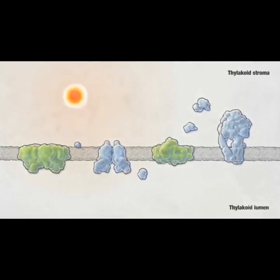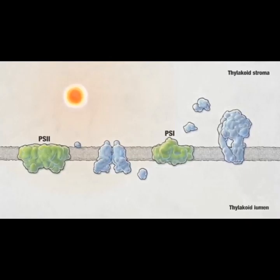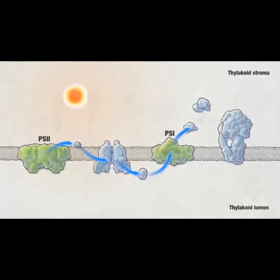There are two photosystems: photosystem 1 and photosystem 2. The photosystems transform light energy to chemical energy by exciting and then shuttling electrons from molecule to molecule in a chain-like fashion on the thylakoid membrane.